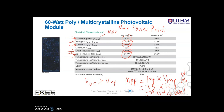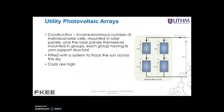Utility photovoltaic arrays are solar cell-based power plants with generating capacity similar to a fossil fuel power plant. Their construction involves an enormous number of individual solar cells mounted in solar panels, with the panels themselves mounted in groups, each group having its own support structure. These utility PV arrays are fitted with a system to track the sun across the sky, and the cost for utility photovoltaic arrays is high.